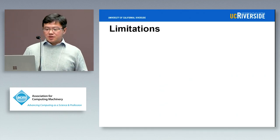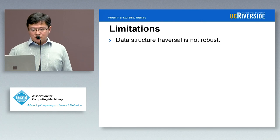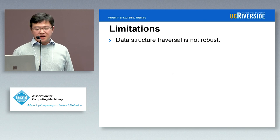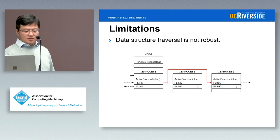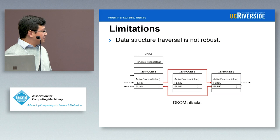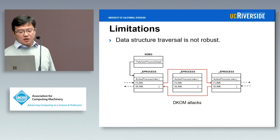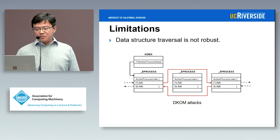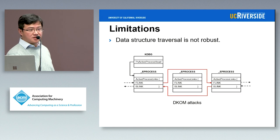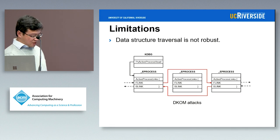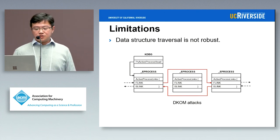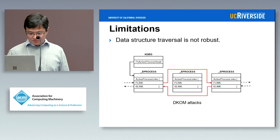Let me go through the limitations again. For data structure traversal, the problem is it's not very robust. There's a known attack called the DKOM attack — Direct Kernel Object Manipulation — where attackers unlink an E-process object from the linked list. If you use a data traversal approach, you're going to miss that object. So this is a very simple and effective approach to evade this analysis.